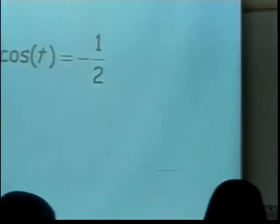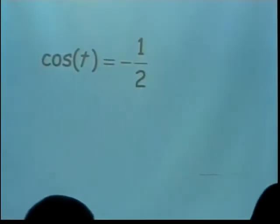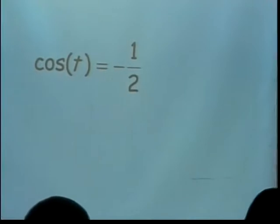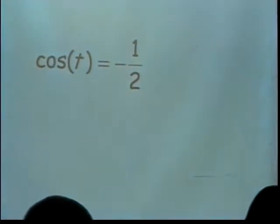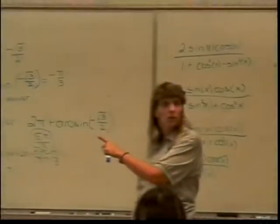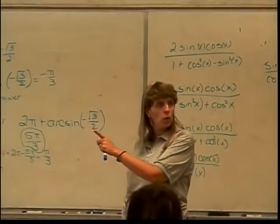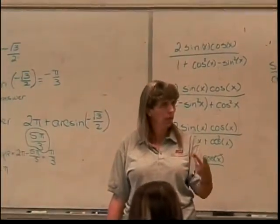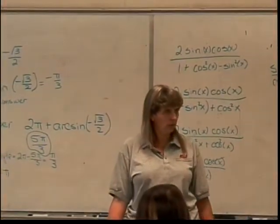T equals negative one-half. I'm going to leave this one for you to do, but here's my question: what quadrants will this answer be in? Two and three, because those are the two places where you will have a negative cosine answer.